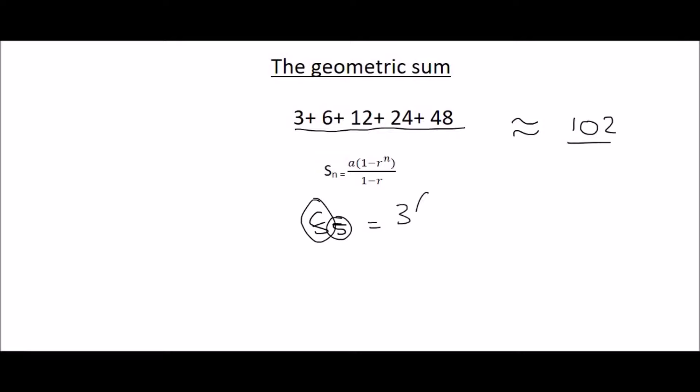Well A is term 1 and that's 3, 1 minus your ratio is 2 because you have to multiply by 2 each time to the power of 5. That's the position that we are looking for. And then at the bottom we have 1 minus 2.